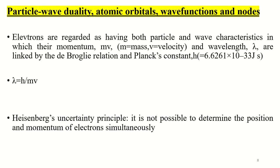By contrast, molecular orbital theory is able to account for magnetic behavior and electronic transitions, but it is still unable to rationalize and predict molecular shapes. Before describing molecular orbital theory and valence band theory, we should learn some key points on the electronic structure of atoms. The first is particle-wave duality, atomic orbitals, wave functions, and nodes. Sometimes it is convenient to regard electrons as small hard particles with definite mass, but more often they are regarded as having both particle and wave characteristics, where their momentum mv and wavelength lambda are linked by the de Broglie relation: lambda = h/mv, where Planck's constant h = 6.621 × 10⁻³³ joule·second.